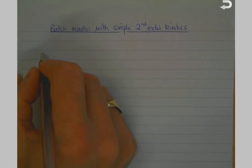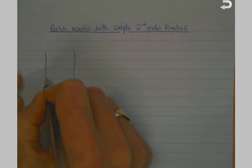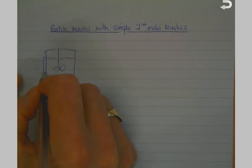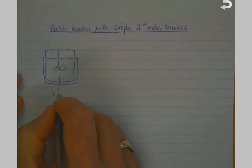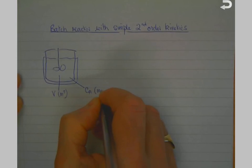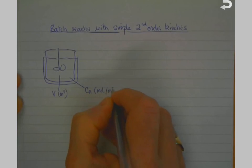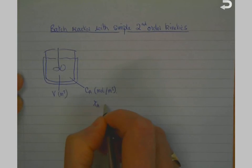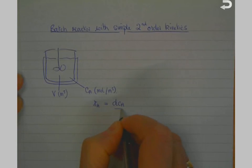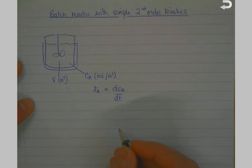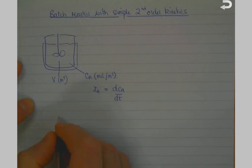Let's look at the case of a batch reactor with simple second-order kinetics. We're considering a stirred tank reactor which has a volume V in meters cubed and a concentration of starting material A, expressed as CA in moles per meter cubed. The rate equation which describes the batch reactor has previously been derived to be RA equals dCA/dt, where RA is the reaction rate of our starting component A.